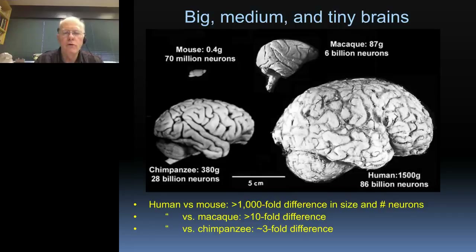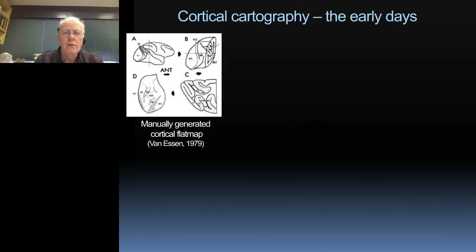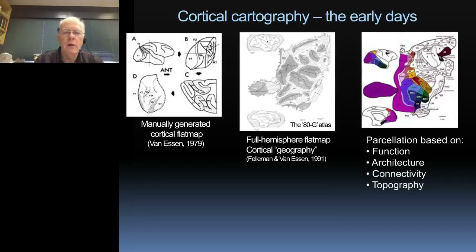Brains not only come in different sizes, but they're tremendously different in the pattern of folds, or so-called convolutions, and that brings us to the realm of cortical cartography. There are many ways to map the cerebral cortex. I started as a cortical cartographer some 40 years ago studying the anatomy of the macaque monkey's visual system.